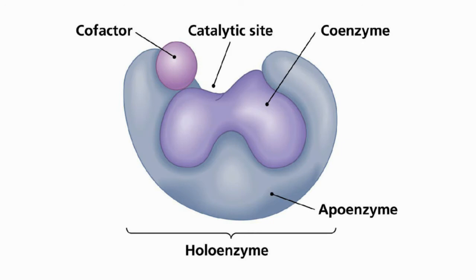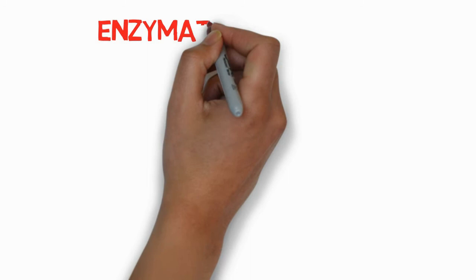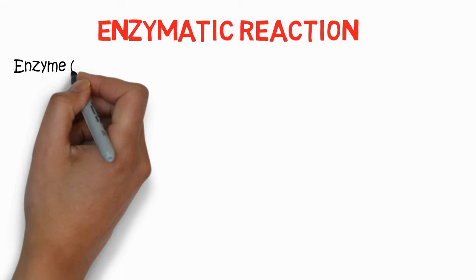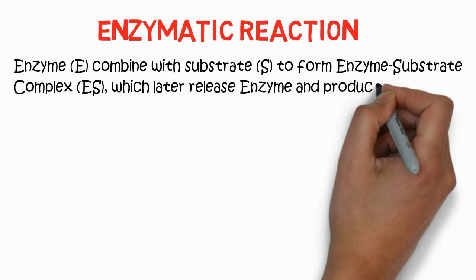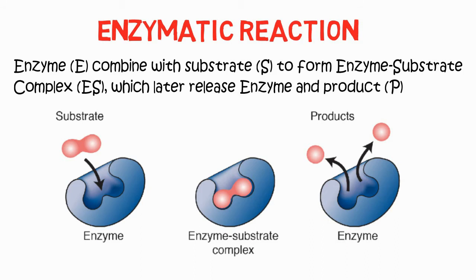Coenzymes are large organic molecules that are loosely bound, while prosthetic groups are tightly bound compounds. In this picture you can see the holoenzyme, which contains the protein part (apoenzyme), the coenzyme, and the catalytic sites and cofactors — these are the important structural terms of enzymes. In an enzymatic reaction, the enzyme combines with substrate S to form an enzyme-substrate (ES) complex, which later releases the enzyme and product. The enzyme is regenerated after releasing the product.